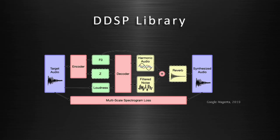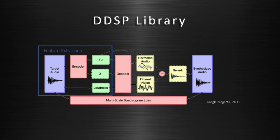Differential Digital Signal Processing, or DDSP, is a library introduced by Google Magenta. One of the main contributions is an autoencoder architecture that learns to resynthesize audio by controlling synthesizer parameters. The encoder extracts pitch and loudness and optional timbre information from the source audio, and the decoder generates amplitudes for natural harmonics and a magnitude response for an FIR filter.